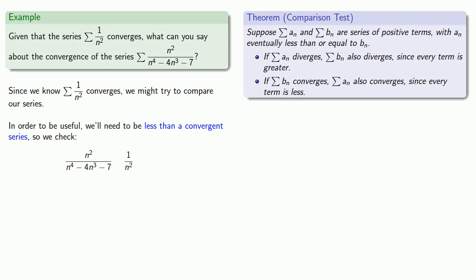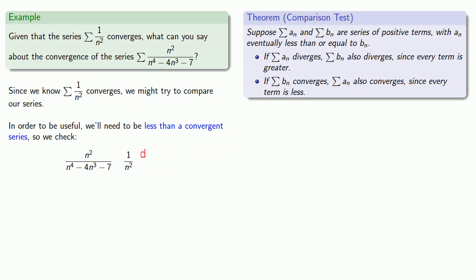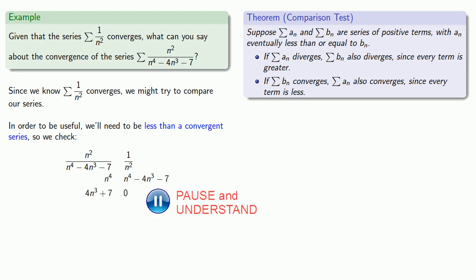We'll compare the terms of our series, n squared over n to the 4th minus 4n cubed minus 7, to the terms of our known convergent series, 1 over n squared. Since we don't know whether these are greater than or less than each other, we'll leave the inequality to be determined and follow the algebra. Cross-multiplying and doing some algebraic cleanup, we see that 4n cubed plus 7 must be greater than 0, so our series terms will be greater than 1 over n squared.